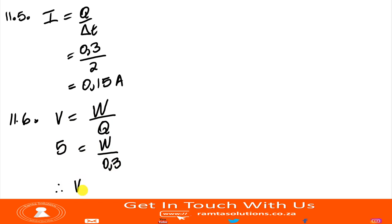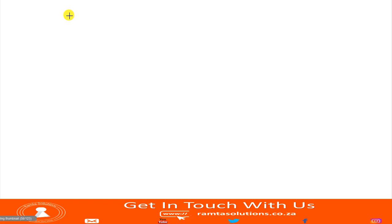V is 5. We don't know what the work done or energy transferred is. What is the charge? The charge is 0.3. Therefore, work done or energy transferred is 5 times 0.3. 5 times 3 is 15. So this must be 1.5. This must be 1.5 joules. The full energy transferred is 1.5 joules.